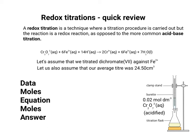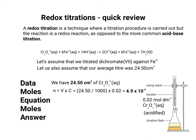Using the equation n = V × C from first-year chemistry, we can calculate that 24.50 cm³ of 0.02 mol dm⁻³ dichromate gives us 4.9 × 10⁻⁴ moles of dichromate. Looking at the equation, the mole ratio of dichromate to iron 2+ is 1:6, so we multiply 4.9 × 10⁻⁴ by 6, giving us 2.94 × 10⁻³ moles of iron 2+ that reacted.